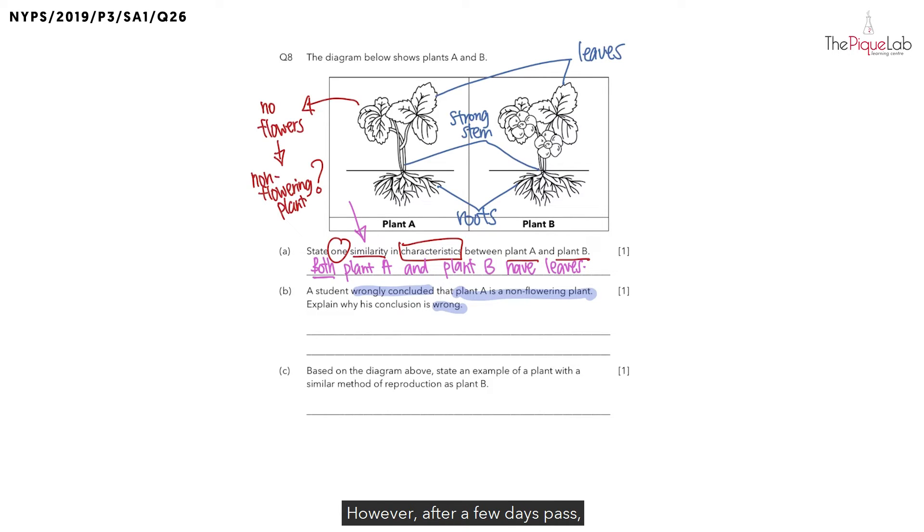However, after a few days passed, you still did not notice any flowers on your tomato plants. Is it because your tomato plants are special and would not be able to bear flowers while other tomato plants can bear flowers? That's not true, right? So why did your tomato plants not have any flowers on them at the current moment?